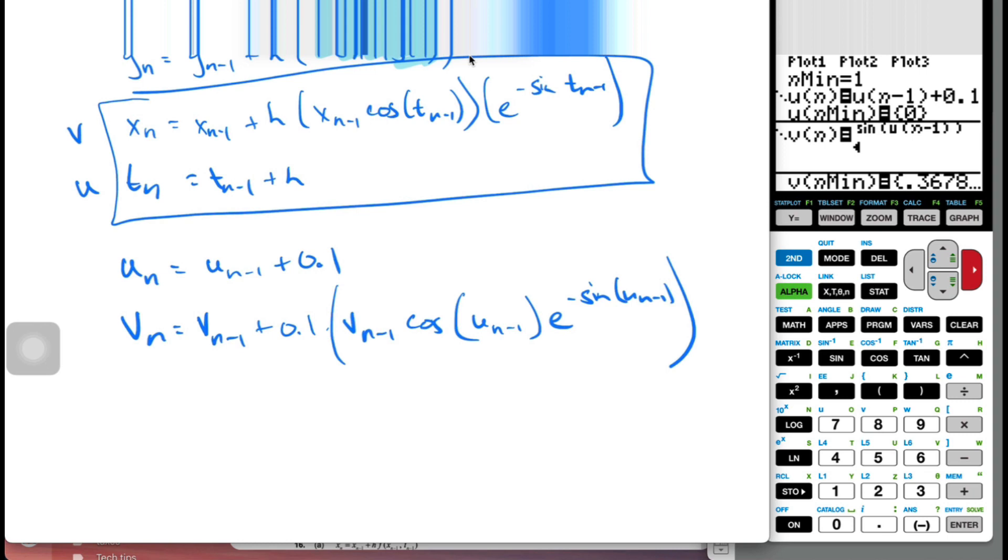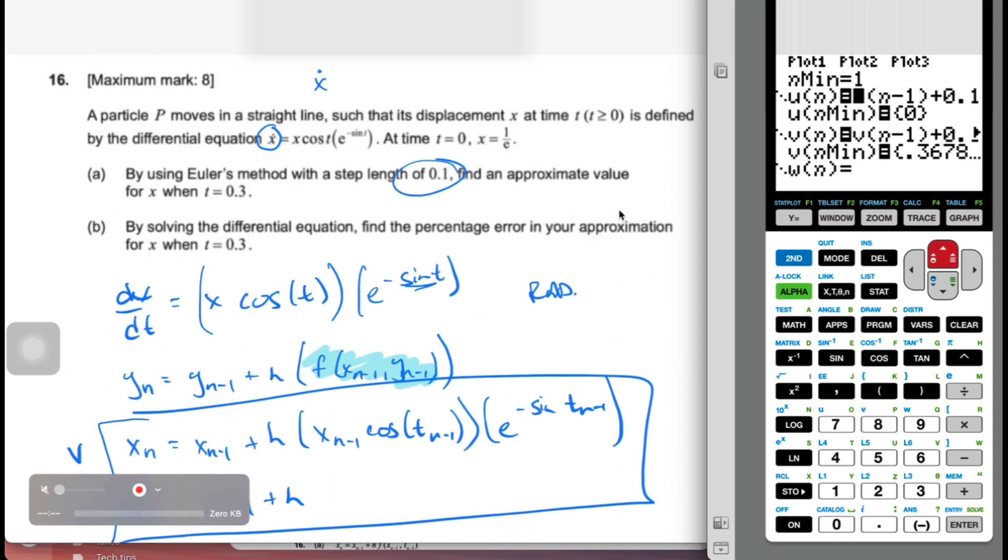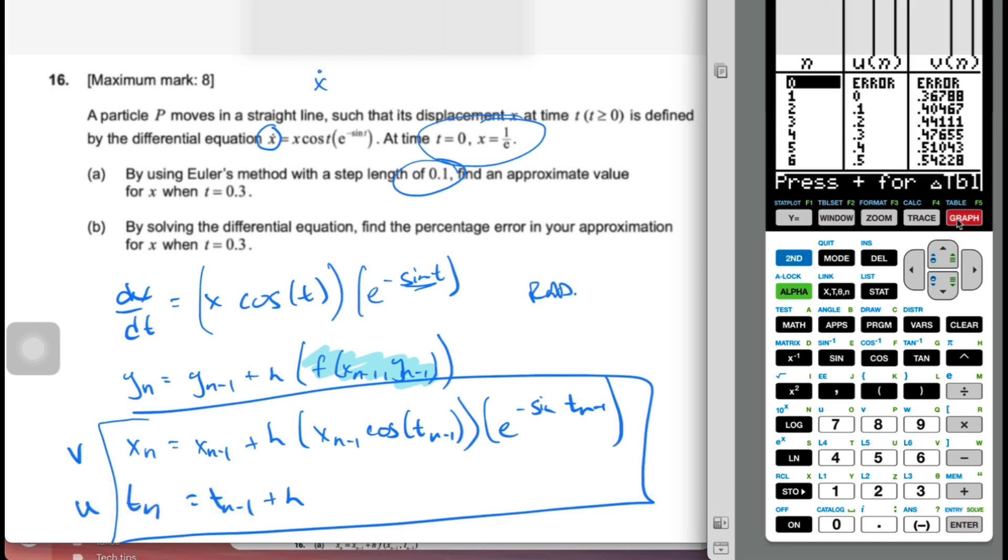And if you look across here on the actual calculator, that is what I've written. Notice my n min is 1, my u min is 0, and my v min is 1 over e. And so when I go to my table, I can see the values here. And 0.3 is going to be this one there is my answer for 0.3, when t is 0.3.